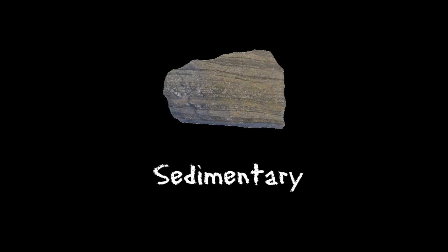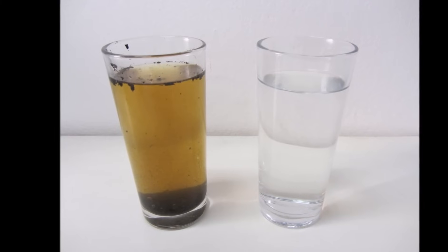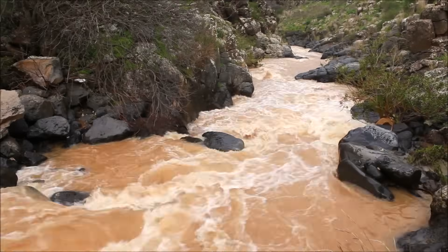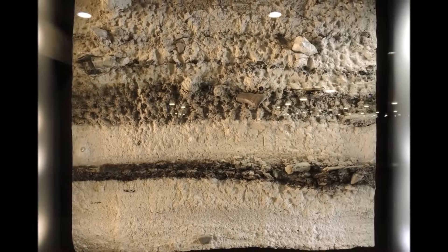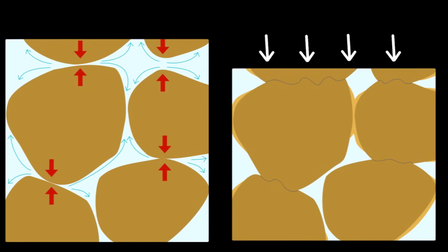The next type of rock is sedimentary rock. Sediment is small particles of sand, mud, and organic material that settle to the bottom of water or land areas, often lakes or oceans. Sedimentary rocks are formed when sediment accumulates over time in deposits that form layers. These layers become squeezed and compressed over time until they consolidate into a rock.